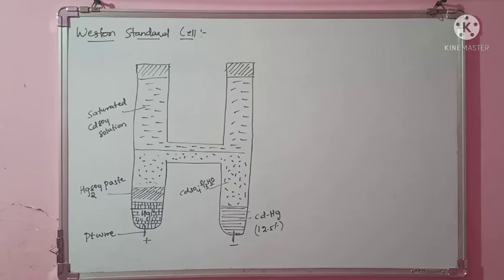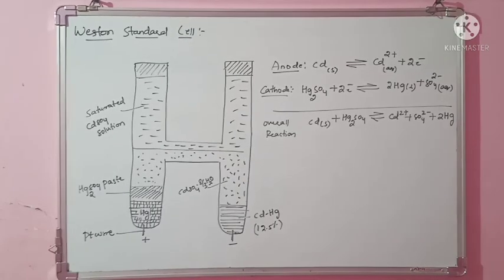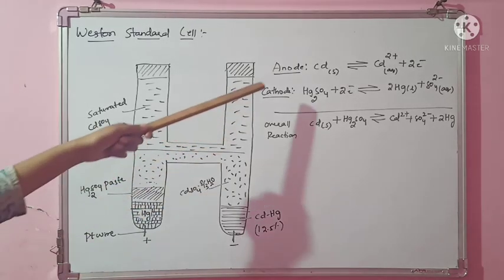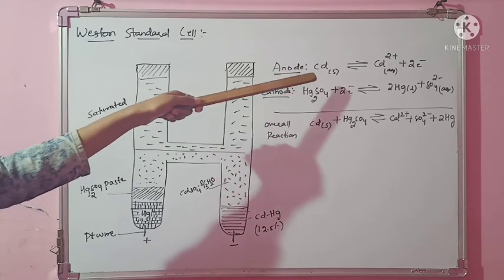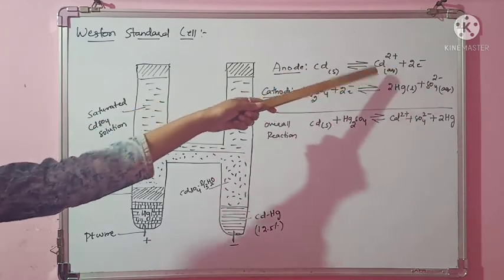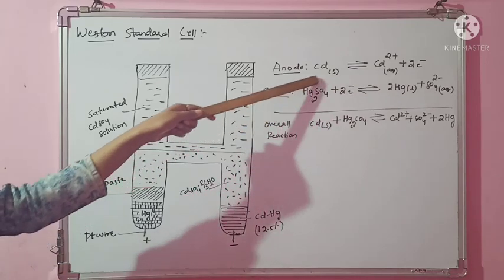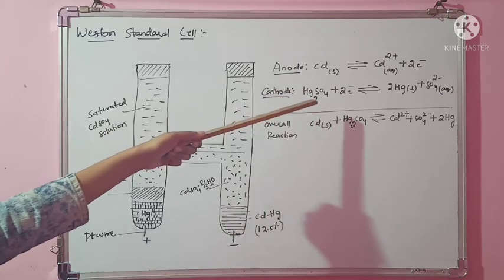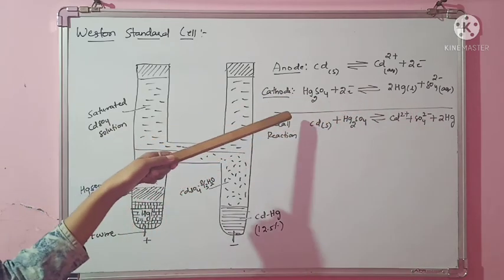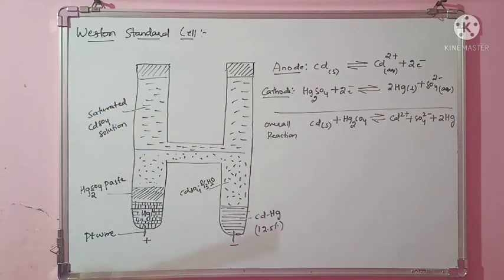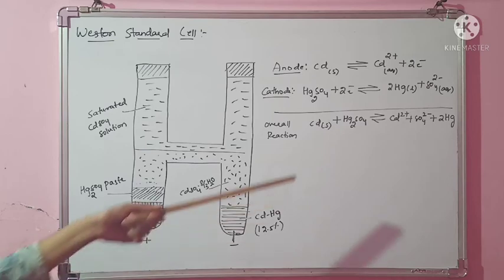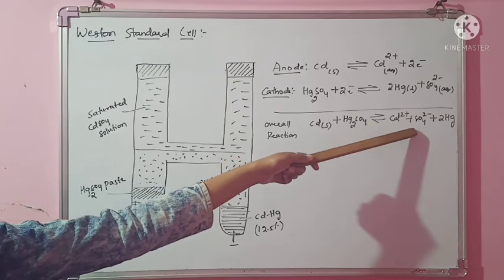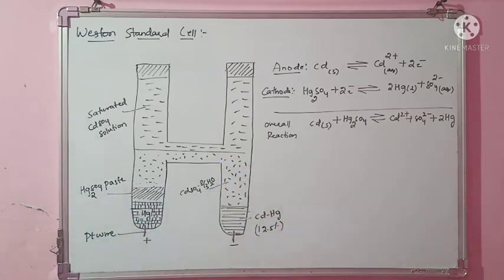Now we will see the cathodic and anodic reactions. The cadmium reduction potential is very less, so at the anode, oxidation takes place — cadmium loses two electrons and forms Cd²⁺. At the cathode, mercury sulfate (Hg₂SO₄) takes two electrons and undergoes reduction. The overall reaction is: Cd(s) + Hg₂SO₄ ⇌ Cd²⁺ + SO₄²⁻ + 2Hg.